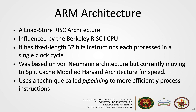In our course, we are going to use the ARM architecture. It's a load-store RISC architecture developed by Acorn Computers Limited and was heavily influenced by the Berkeley RISC-1 CPU. It has fixed-length 32-bit instructions, and each is processed in one clock cycle. Older ARM processors are based on von Neumann architecture; however, they are currently moving to a split-cache modified Harvard architecture to increase processing speed. ARM processors also use a technique called pipelining to more efficiently process instructions. We will talk more about ARM architecture in the next succeeding weeks.